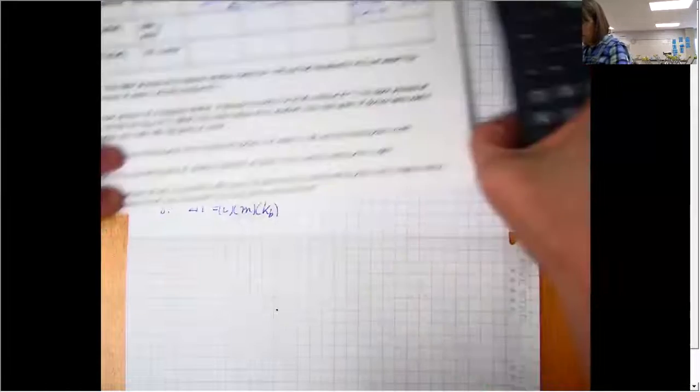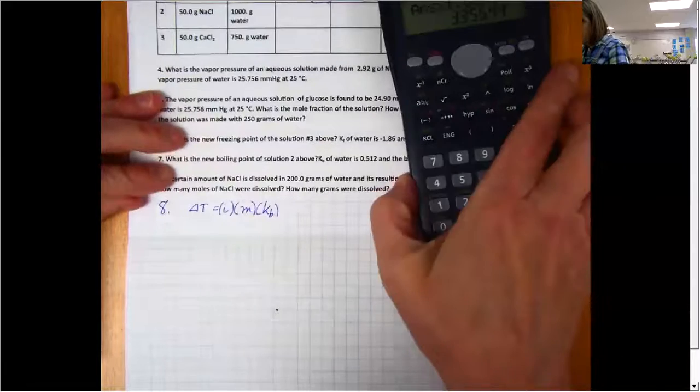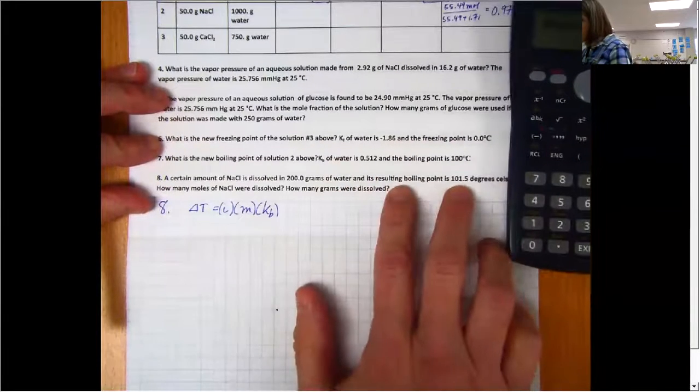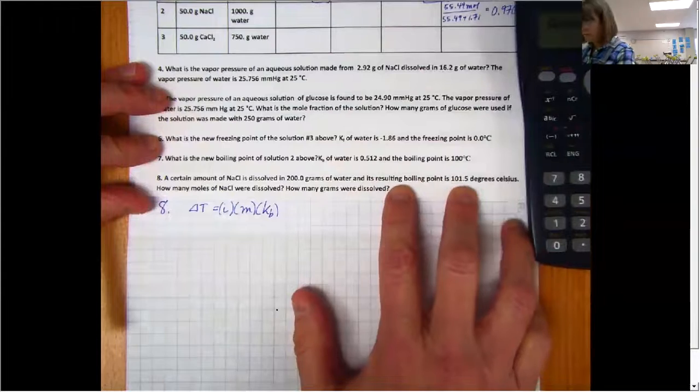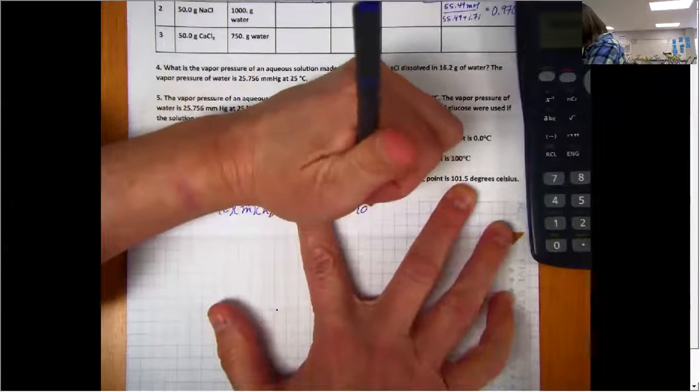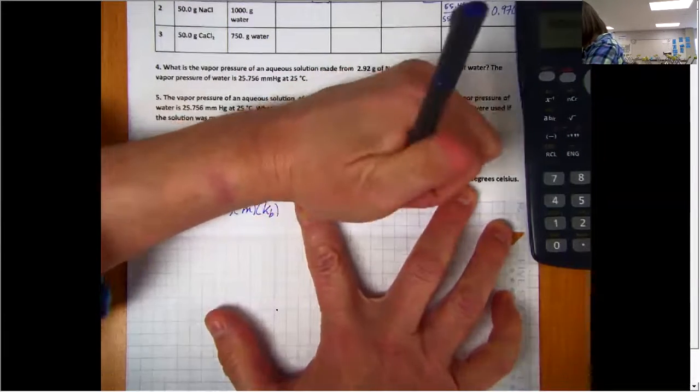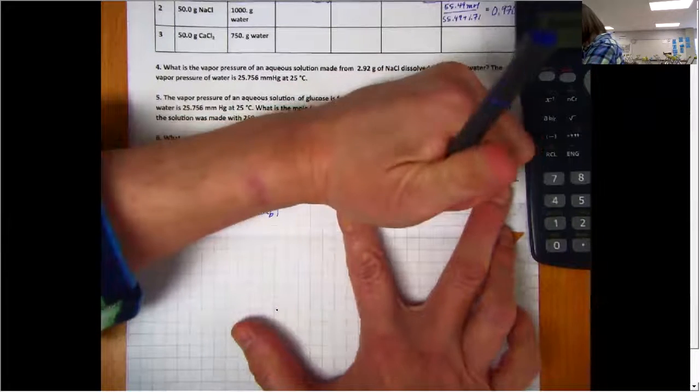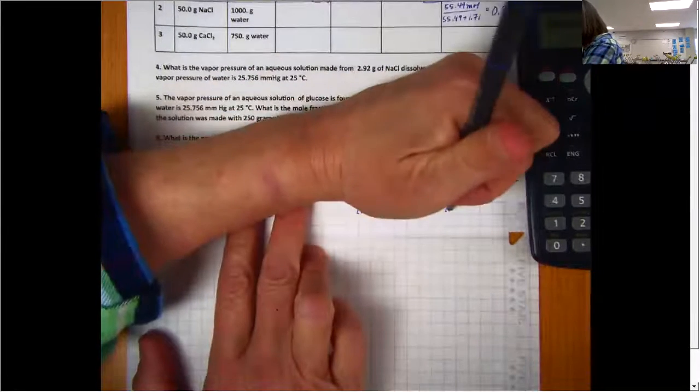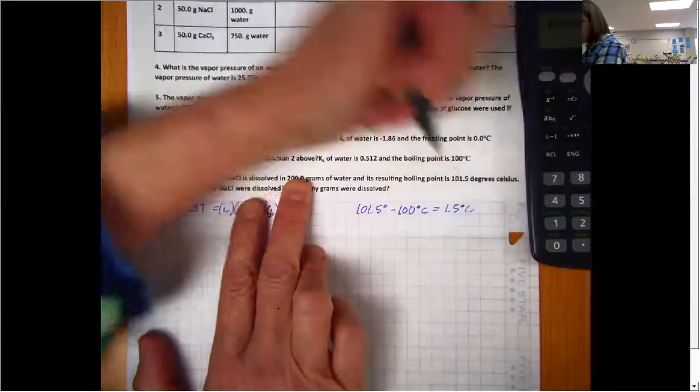So on number eight, let me fold this. The information we're given so far is that the new boiling point is 101.5 degrees Celsius. Well, we know that water boils at 100 degrees Celsius. So our Delta T is going to be 1.5 degrees Celsius. Does that make sense to everybody? That's just the difference between boiling and what the new temperature was.